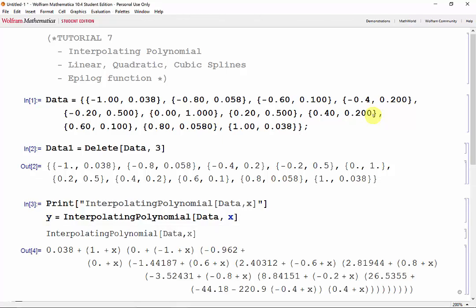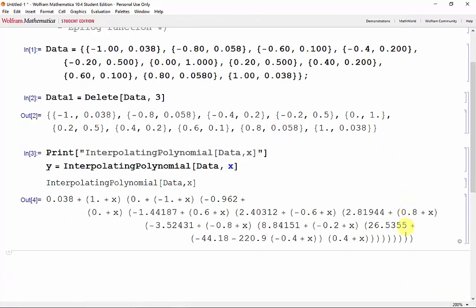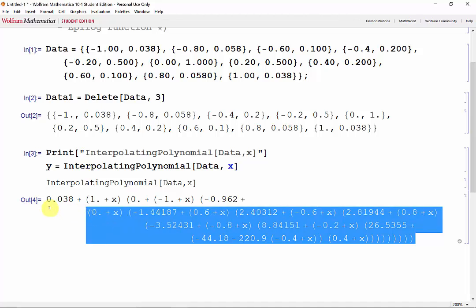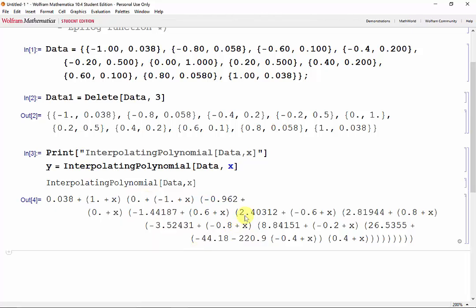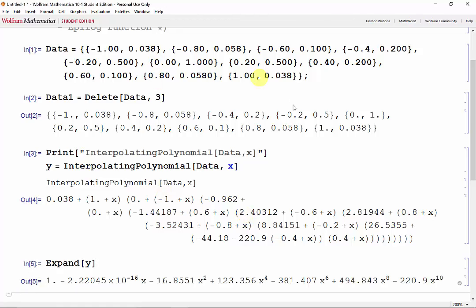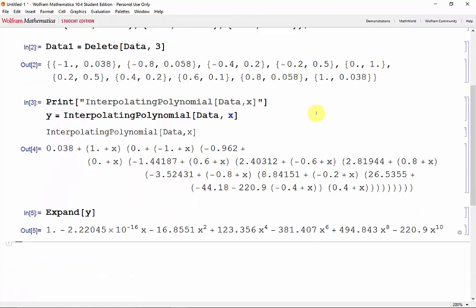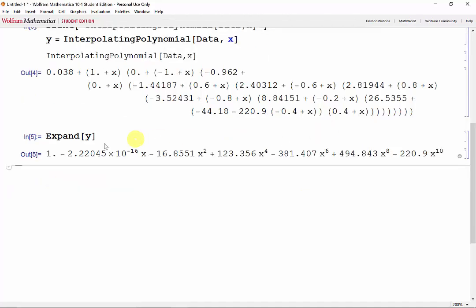Shift enter, and here we have our long simplified interpolating polynomial. If we wanted to see the coefficients of the polynomial, we could use the expand function. So let's go ahead and expand y, shift enter, I'll scroll down, and here we can see all of our coefficients.